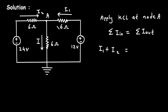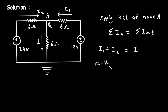So let's write: entering currents I1 plus I2 is equal to the leaving current I. Now this current I1 can be written using Ohm's law. Let's say this node voltage is VA.